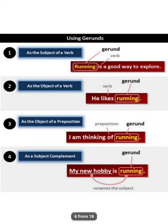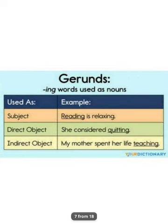The gerund can also act as an object. 'He likes running,' 'He likes swimming,' 'He likes singing' — here the gerund plays the role of object. 'I am thinking of running,' 'I am thinking of talking,' 'I am thinking of playing' — these are gerunds as the object of a preposition. As a subject complement: 'My new hobby is running' — here 'running' is the gerund as subject complement.